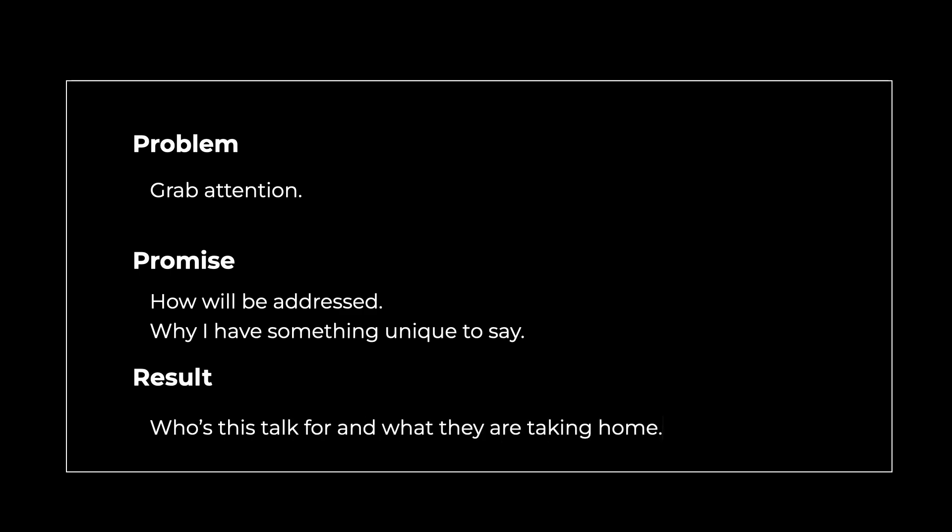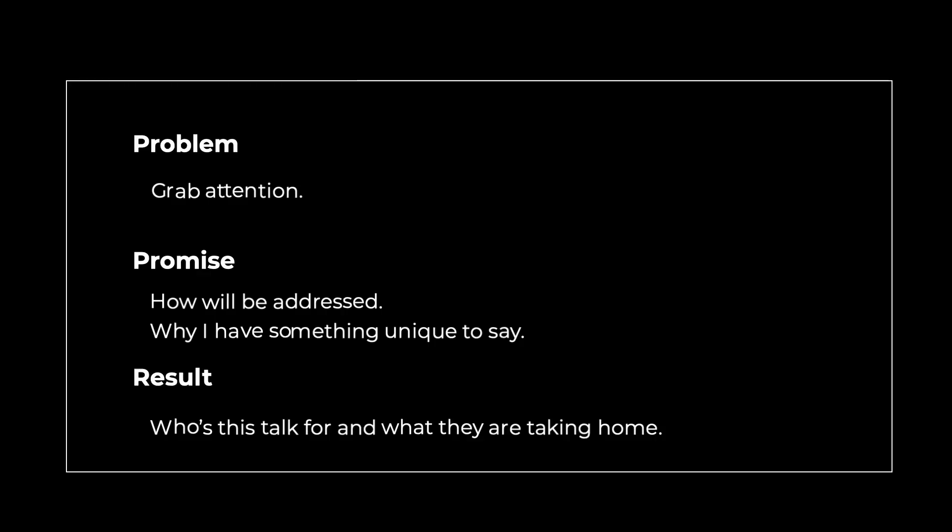Why you have something unique to say about what you're discussing in this session. And finally, in the third part, you talk about the result — where you say who should come to this session. For example, if you are a junior developer, this session is for you. If someone has a lot of experience, they'll understand it's an introduction to that topic and might not be for them. More importantly, you state the takeaways they will have — what they are taking home, what will change, what's the main thing they will learn in that session.